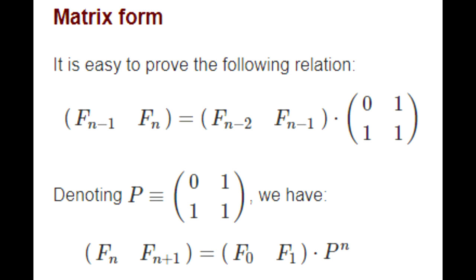And if you denote this matrix 0 1 1 1 as P, you'll realize that the current term and the next term is equal to the 0th term and the first term multiplied by P to the nth.